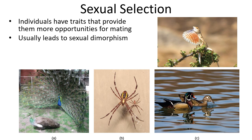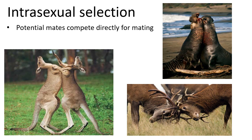There are two types of sexual selection: intrasexual and intersexual. Intrasexual selection — 'intra' meaning within — is where competition occurs within the same sex. Potential mates compete directly, generally males through physical combat. Males fight for access to females: elephant seals fight, deer and other ungulates fight with antlers, kangaroos box, and whoever can take the greatest beating gets access to females for mating.